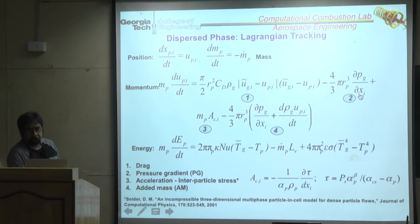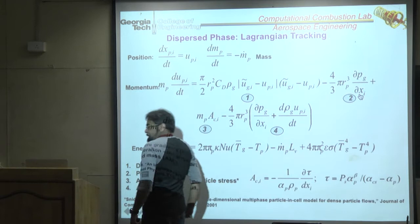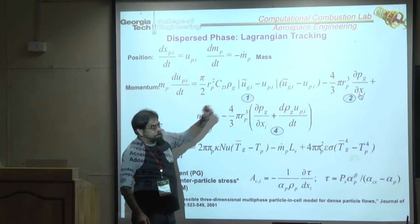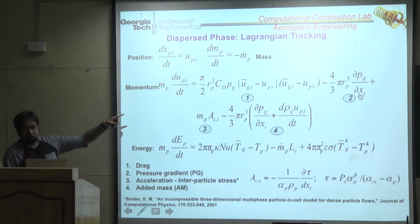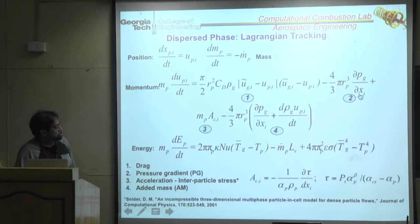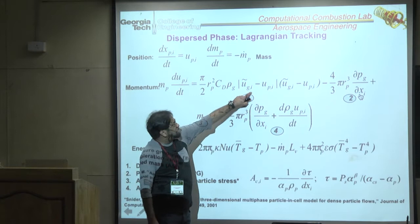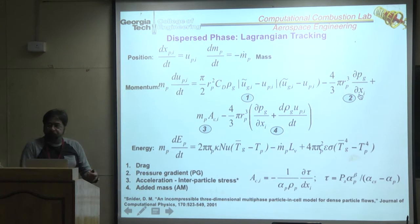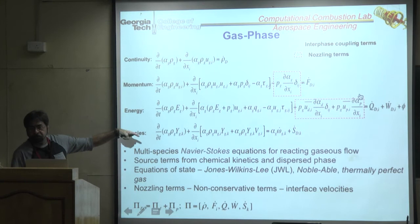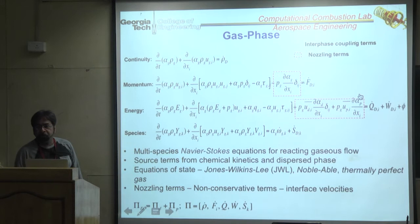The velocity in the drag law is the resolved gas-phase velocity based on LES filtered quantities, including subgrid kinetic energy. Filtering the full equations produces unknown subgrid terms — many are ignored, but Reynolds stresses and similar terms are modeled using a subgrid eddy viscosity model that requires solving a kinetic energy equation.